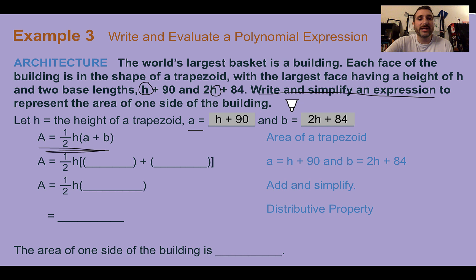Once we set what a and b are equal to, let's plug them into the actual formula. So we can plug in h + 90 and 2h + 84. For the trapezoid, we add the two bases together. So let's add all of this together by combining like terms. h + 2h is 3h, 90 + 84 is 174.